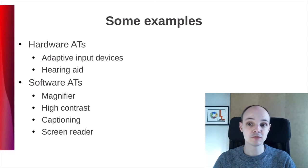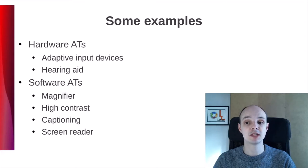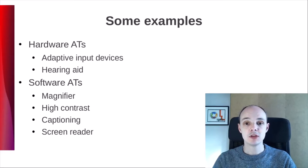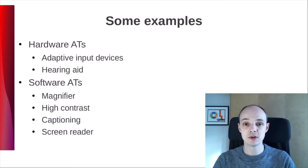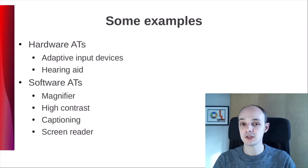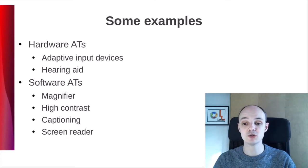ATs can be hardware or software provided. Examples of hardware ATs are adaptive input devices like special mice or keyboards, or hearing aids. Most usually, you will hear about software solutions. Some are provided by the system, like a magnifier to increase the size of the visualization area around where the focus is, high contrast mode for operating systems and applications, things like setting a bigger mouse pointer or adding a trail, captioning to provide visual feedback when you cannot receive audio, or the opposite — a screen reader to transform text into audible feedback.